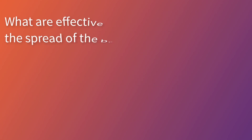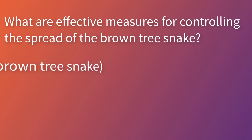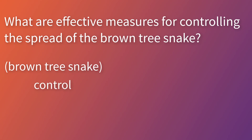Our example research question is: What are effective measures for controlling the spread of the brown tree snake? Brown tree snake is obviously our primary keyword. A keyword can be more than one word. From this question, we could also use control, spread, and effective.